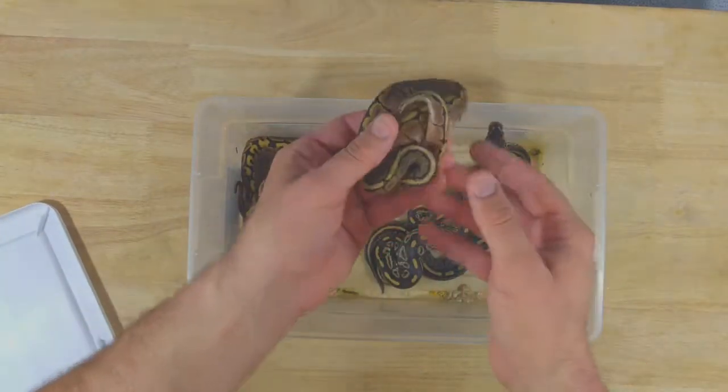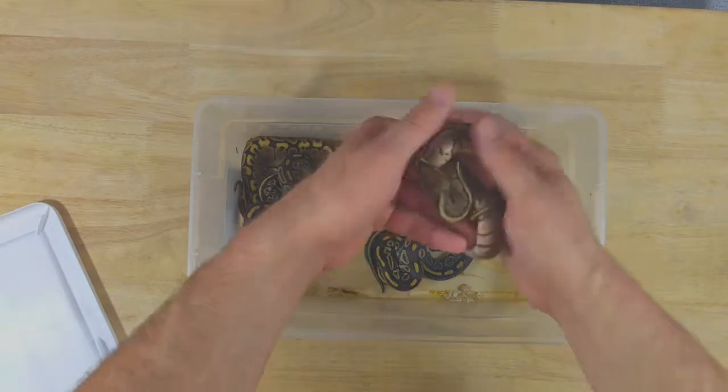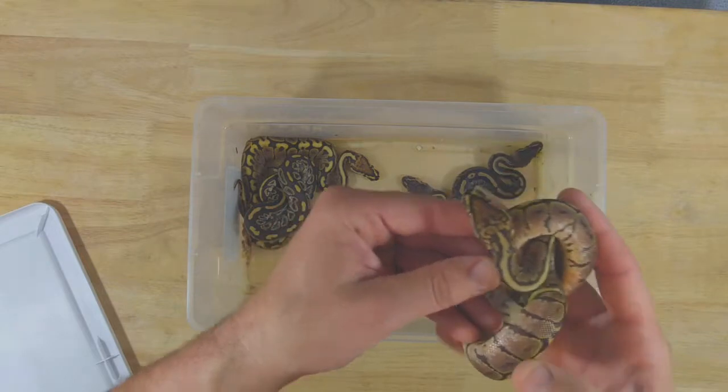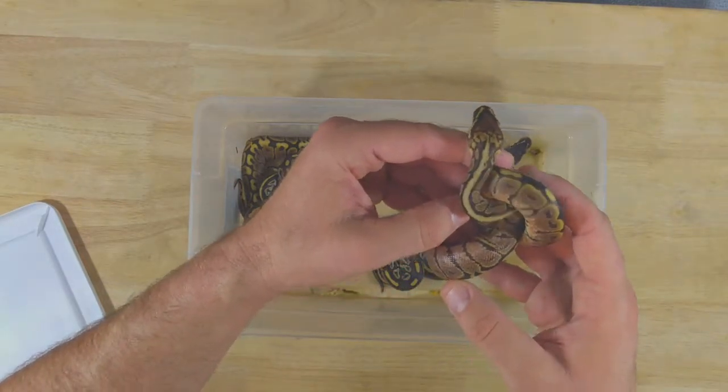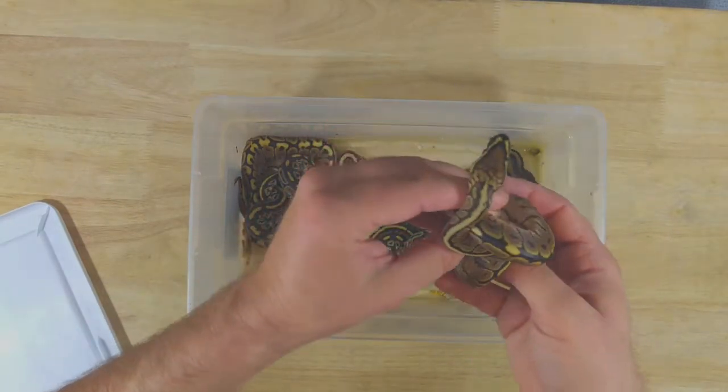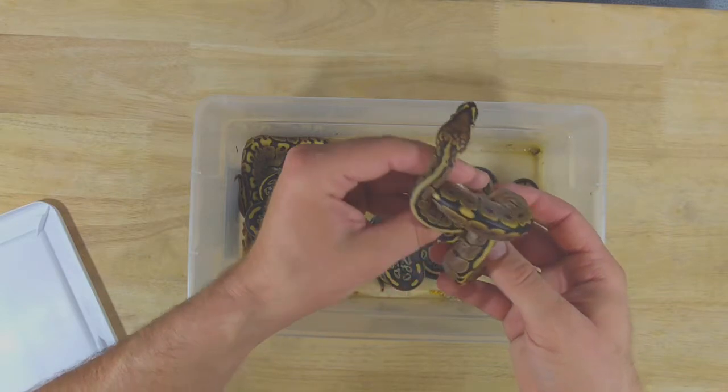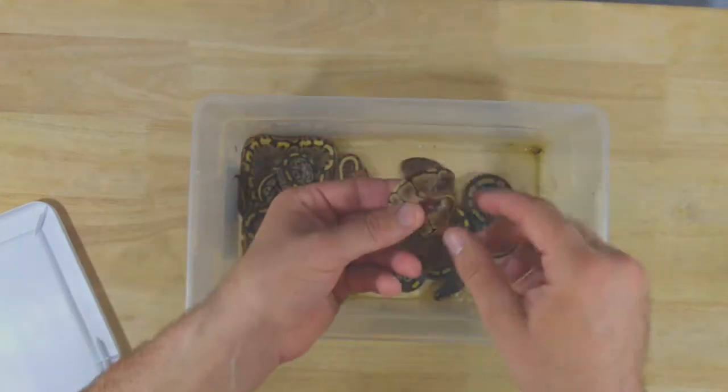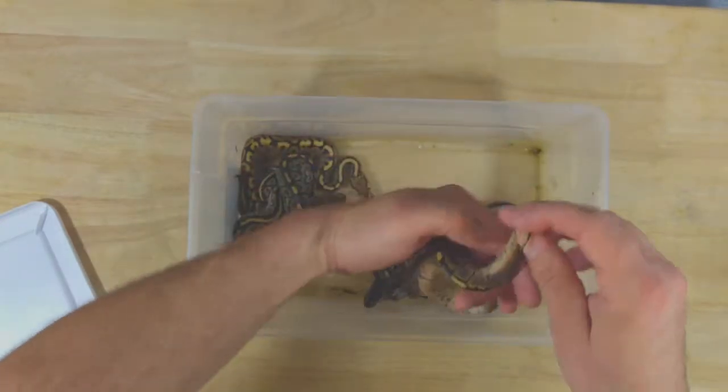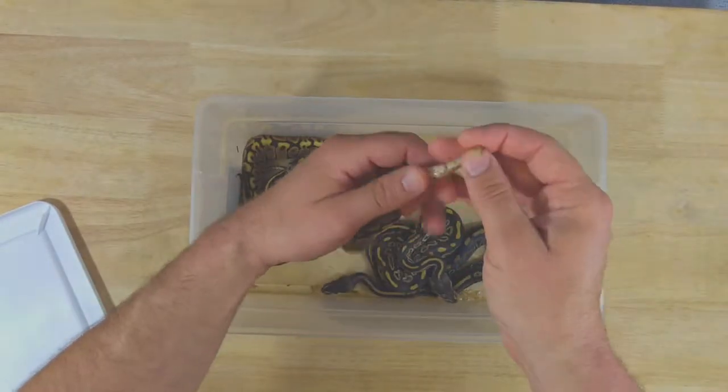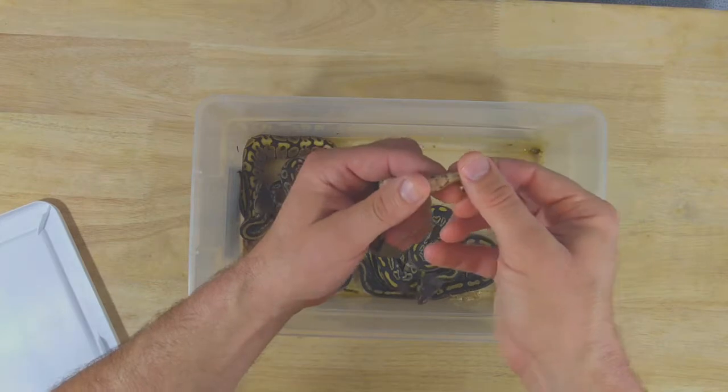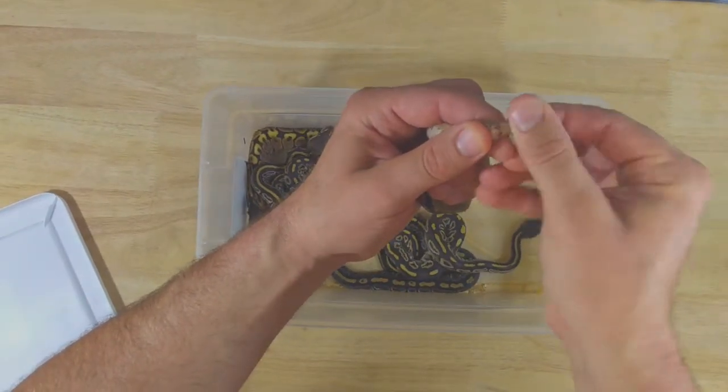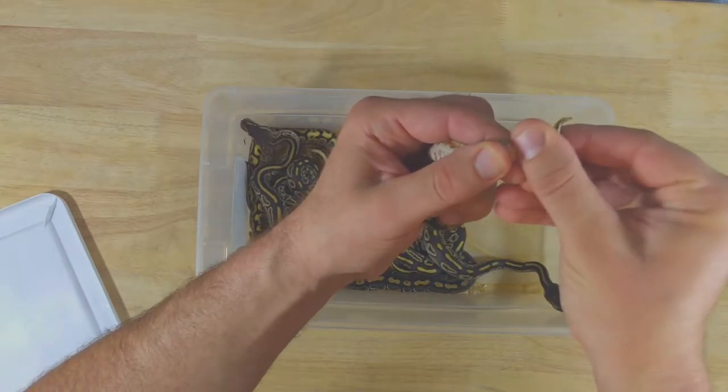This is another, I mean, look at this head pattern. I mean, that is crazy. I don't know if you're picking that up, but that head pattern is just insane. I love the Red Widows. This is another Red Widow, 100% Het Hypo. Again, the pairing was the Hypo Red Widow to my Red Head Mojave, 100% Het. Another male.